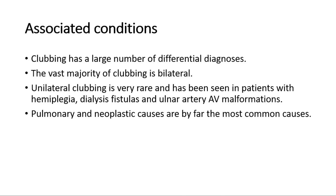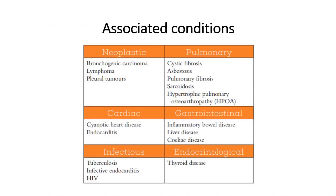Pulmonary and neoplastic causes are by far the most common causes. This table shows the possible causes of clubbing. Neoplastic causes include bronchogenic carcinoma, lymphoma, or pleural tumors. Pulmonary causes include cystic fibrosis, asbestosis, pulmonary fibrosis, sarcoidosis, and hypertrophic pulmonary osteoarthropathy.